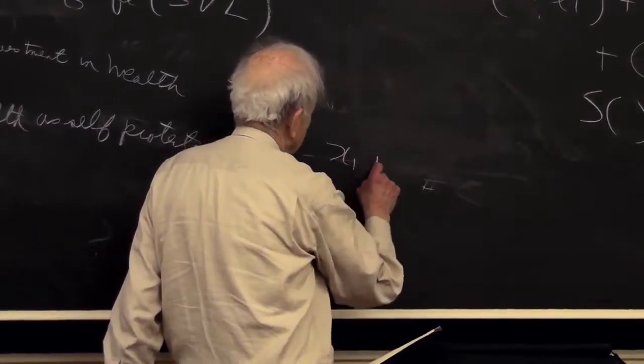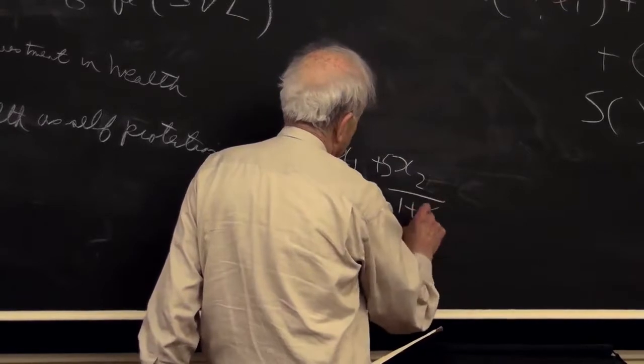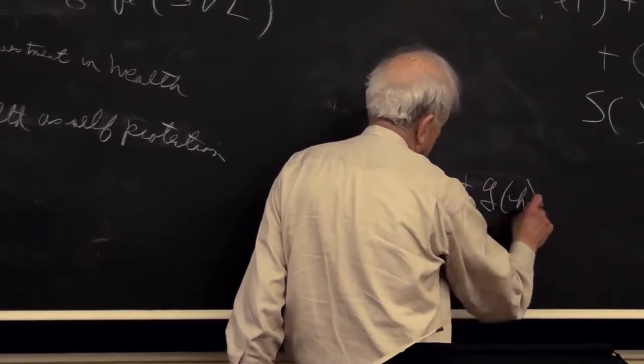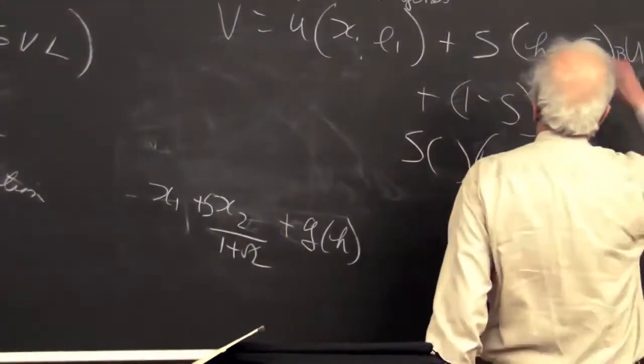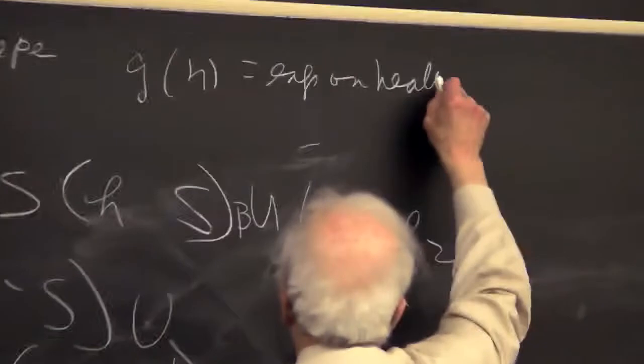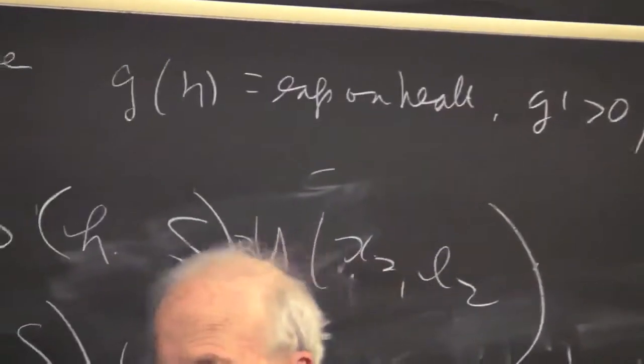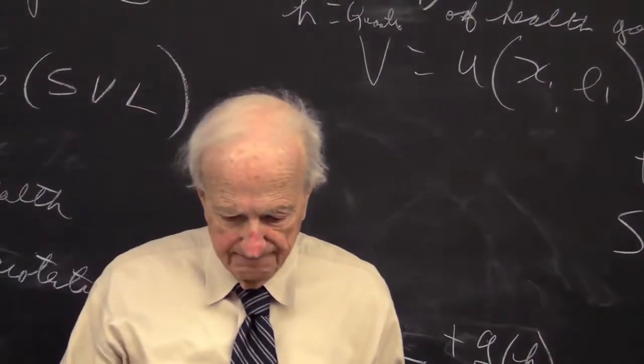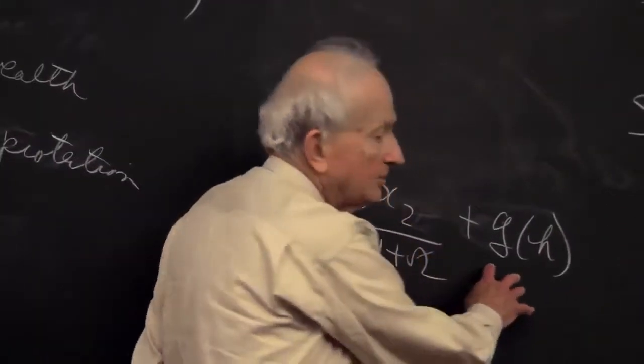The budget constraint is going to be X1 plus X2 times S1 plus R plus G of H. Now, G of H—G equals expenditures on health. I'm going to assume G prime is greater than zero and G double prime is greater than or equal to zero. So, some convex expenditure function on health. It could be linear, and all the expenditures take place in the first period.